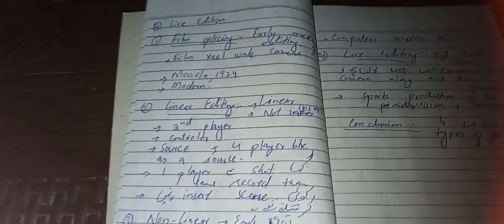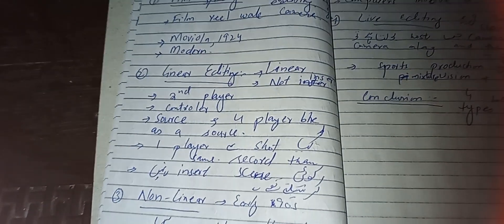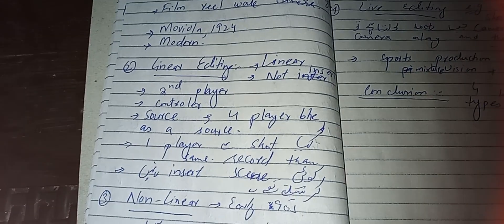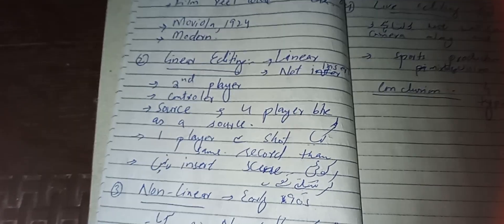In linear editing, there's a second player, controller, and source. There are four players in the scene.